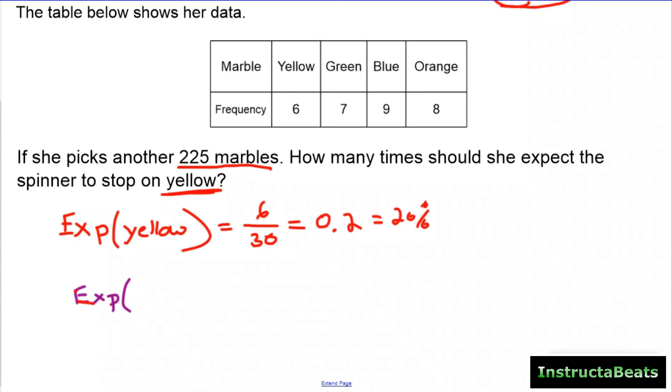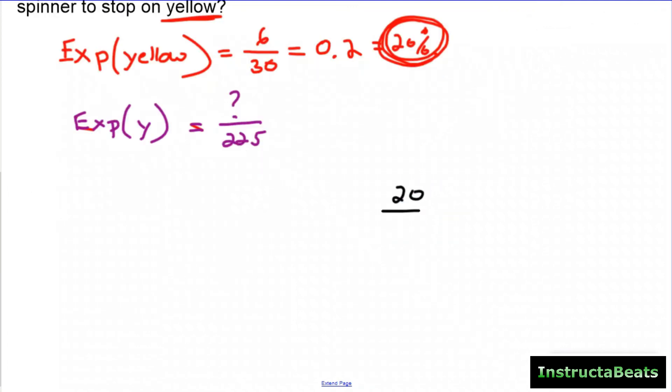So if we did another 225, how many times could we expect it to land on yellow? What is the probability that that's going to happen? Well, we know that our experimental probability told us should happen about 20% of the time or six out of every 30. So if we use that same ratio, there's two different ways we can do this. We could think about percent or we could set up a proportion. Now I'm going to set up a proportion for this. So I know because it was 20%, that's going to be 20 out of 100 is what we would expect it to land on yellow. And that's going to equal our new total to be 225. And we're looking for how many times we'll actually land on yellow.